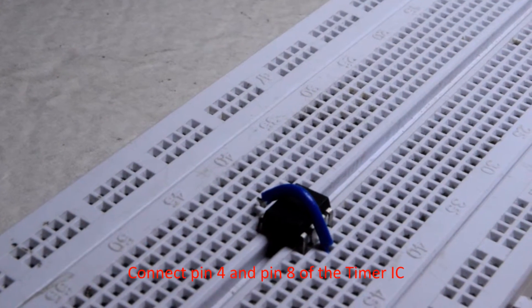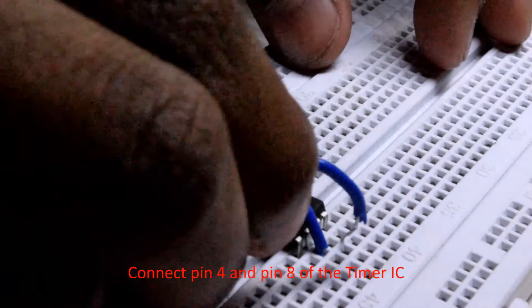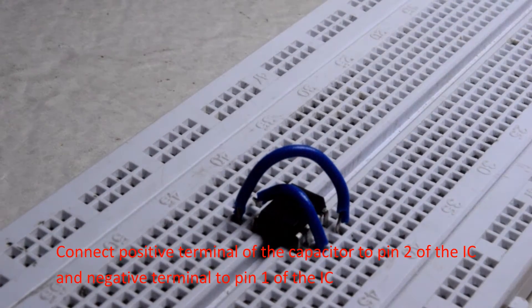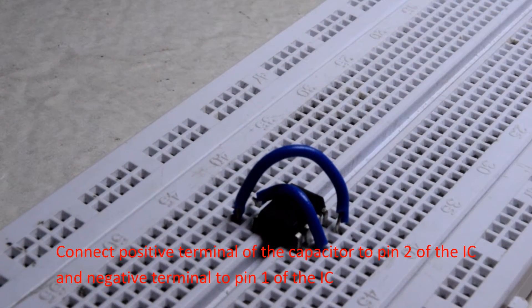Connect pin 4 and pin 8 of the IC. Now take your electrolytic capacitor and connect its positive terminal to pin 2 and negative terminal to pin 1 of the timer IC.